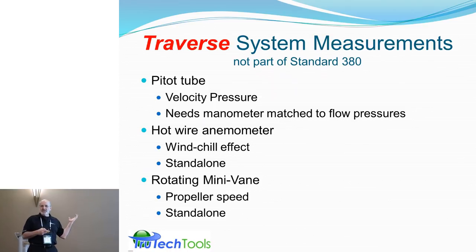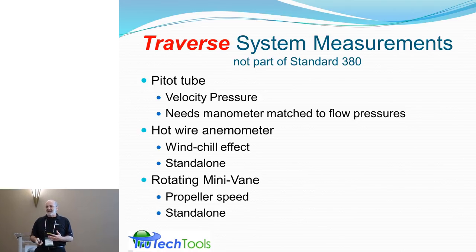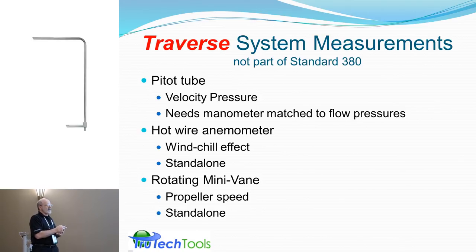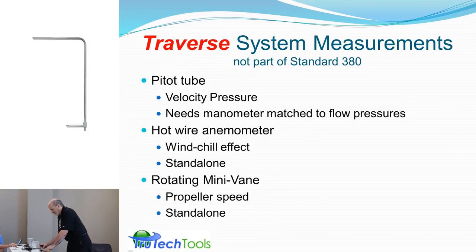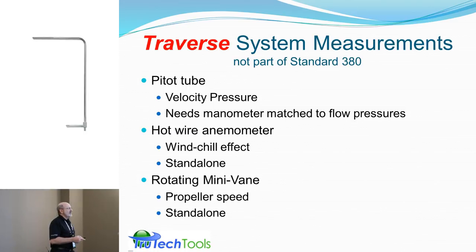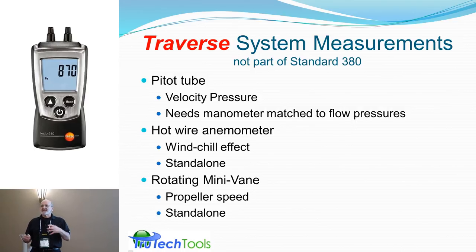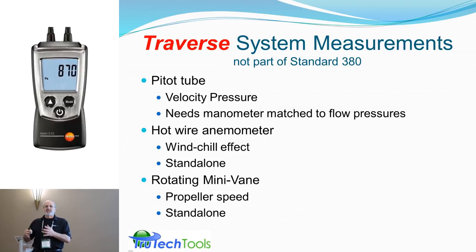Speaking of traverses — as opposed to bulk measurements — is anyone familiar with what a traverse is? Traverse indicates motion: you're moving and scanning an area. For a traverse-type system measurement at the air handler, a pitot tube is what's used — I'll pass one around. To use a pitot tube you need a manometer matched to the flow pressures. If the manometer isn't sensitive enough to pick up low flow velocity, you'll get erratic readings. There are handheld units from Elmo, TSI, and Testo that do this low-range pressure measurement so you can extract low velocities from the pitot tube.